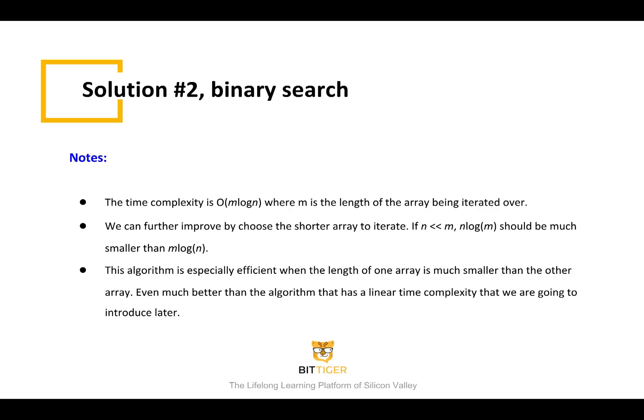Another improvement we can make is to compare the lengths of the two arrays in the beginning, and choose the shorter array for the outer loop. If N is much smaller than M, we know N log M is much smaller than M log N. This is actually the best solution for this use case, where the length of one array is much smaller than the other. It is even much better than the linear algorithm that we will be discussing later.